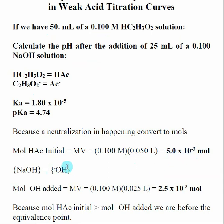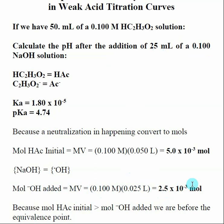Next, we want to know how many moles of hydroxide we've added. The molarity of sodium hydroxide equals the molarity of hydroxide. Moles equals molarity times volume: 0.1 molar sodium hydroxide times 0.025 liters gives us 2.5×10⁻³ moles of hydroxide added.